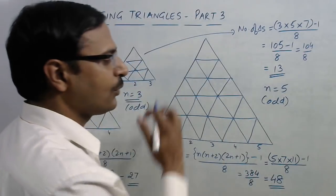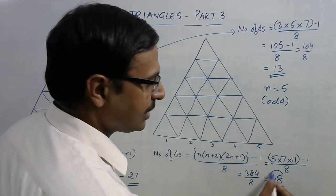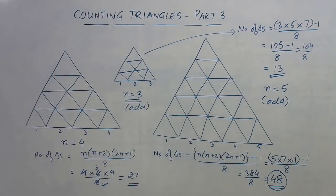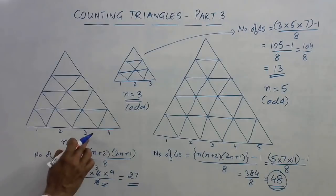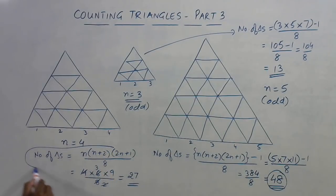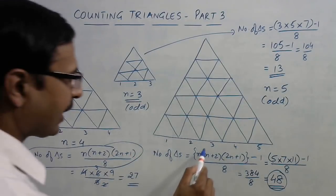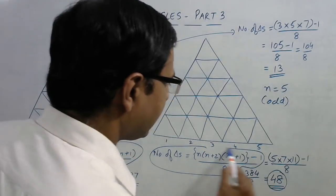So for even number of triangles on the base you have this formula, and for odd number of triangles in the base you have this formula. That completes the number of series of videos on this kind of figure. I shall take up a different figure in my next video.